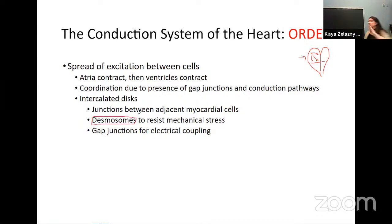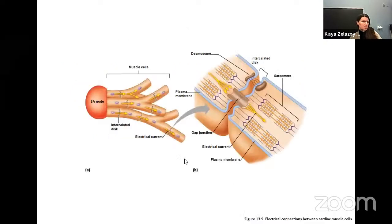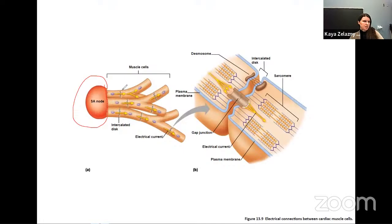Desmosomes — probably not a word I'll test you on — are a mechanical type of junction between cells that resist mechanical stress. We have gap junctions and desmosomes together in structures called intercalated disks between our cardiac cells. Here's a picture: we see the SA node with pacemaker cells, then the actual cardiac muscle cells. We can see the intercalated disks, the action potentials going across through these cells, and zooming in we see the desmosomes holding cells together physically and the gap junctions where the electrical impulse can pass straight through.